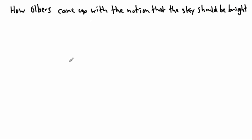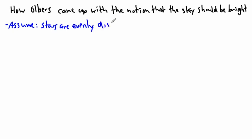Let's start with an assumption. Using Newton's assumptions, we're going to assume that the stars are evenly distributed — in other words, found at equal distances apart. We're going to take Newton's assumptions and go with them, assuming that the stars are evenly distributed.